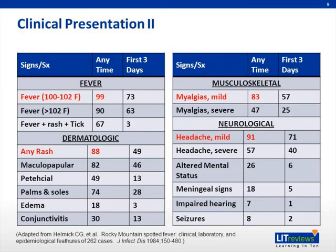In addition to the more common symptoms of Rocky Mountain Spotted Fever, less common but more severe manifestations include CNS involvement such as meningoencephalitis, seizures, stupor, or coma; cardiovascular manifestations such as myocarditis, myocardial vasculitis, AV block, dysrhythmias, or left ventricular dysfunction; and pulmonary manifestations such as pneumonitis from microvascular leakage of fluid into the alveolar space and interstitium.